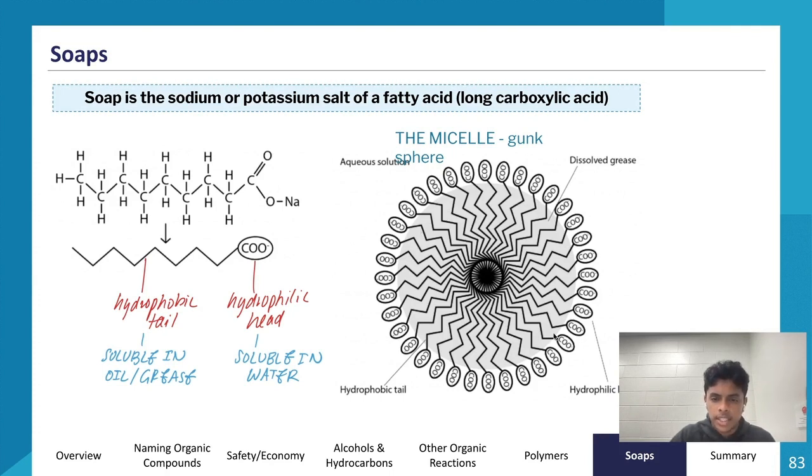It ends up looking like a micelle. This micelle is where the hydrophobic tails of soap molecules come together to trap the grease molecule inside, like a group of soap molecules. Because it's trapped inside a group of soap molecules, these grease particles can't combine.